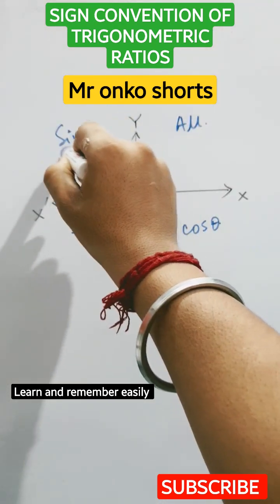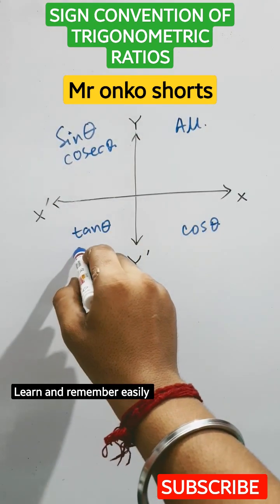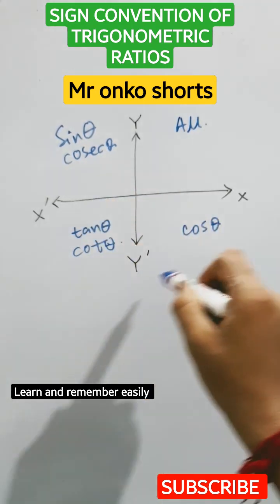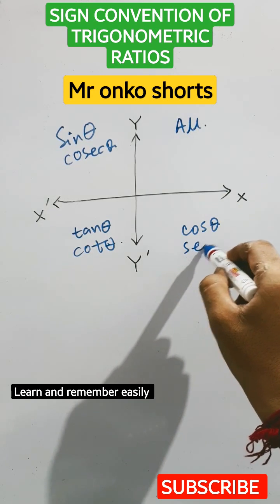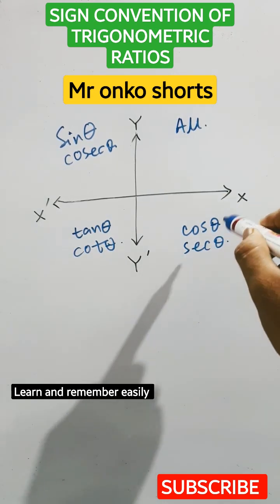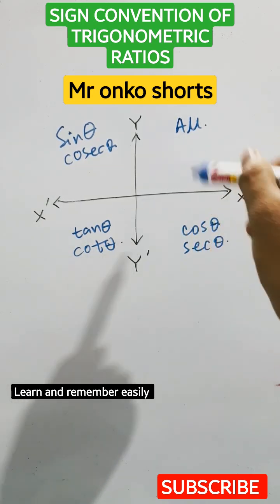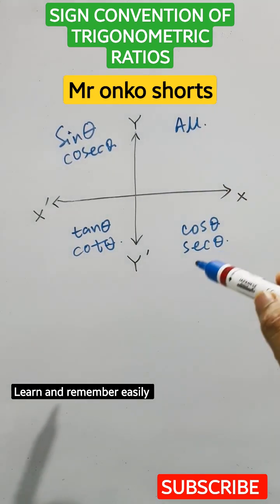Now, in the second quadrant sine theta and its reciprocal cosec theta is positive. Tan theta and its reciprocal cot theta is positive in the third quadrant, and in the fourth quadrant cos theta and reciprocal sec theta is positive. The other angles including their trigonometric ratios are negative in the respective regions.